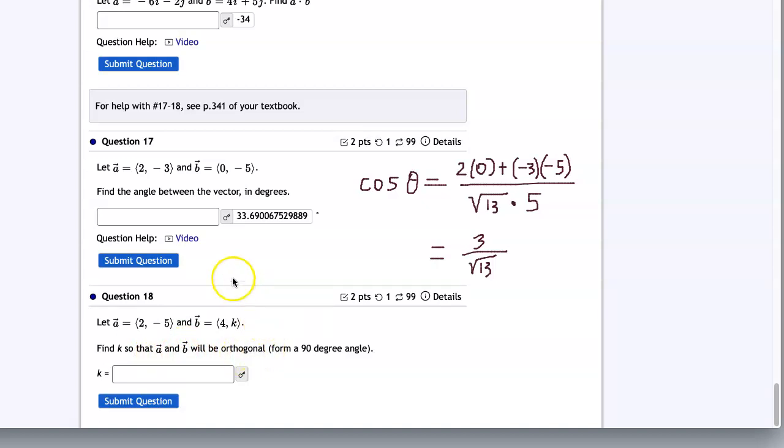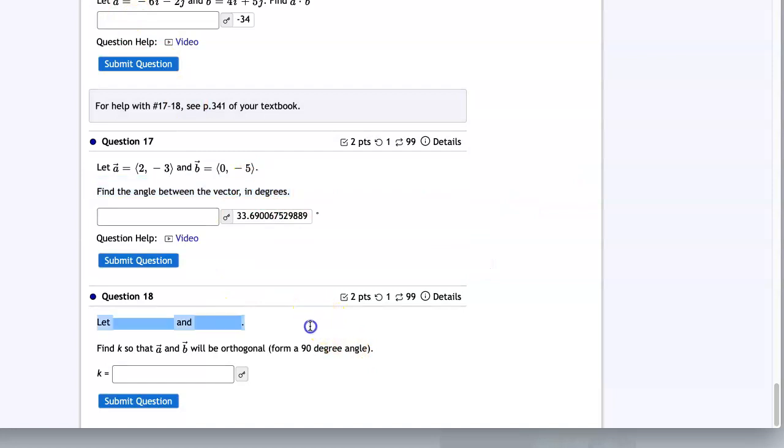So that would look like this, we would want, sorry about that one. We would want two times negative five dot four times k, sorry, four comma k.